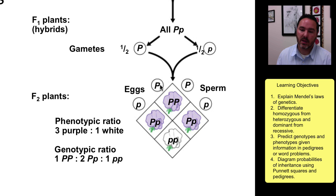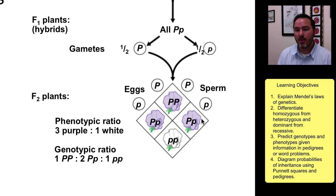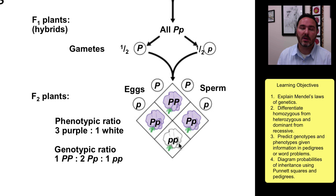If you put the big P, little P, big P, little P on each side of this Punnett square, you see that you end up with a big P, big P possibility; a big P from one side and a little P from the egg gives a big P, little P possibility. The other way, you get a big P from the egg and a little P from the sperm — another big P, little P possibility — and then finally you get the little P, little P possibility.